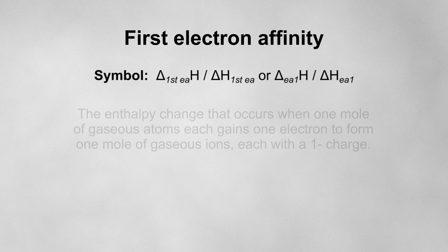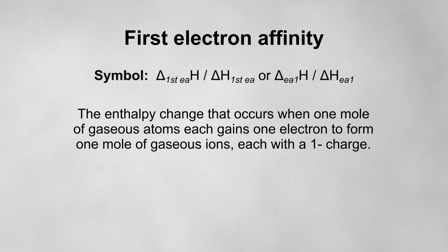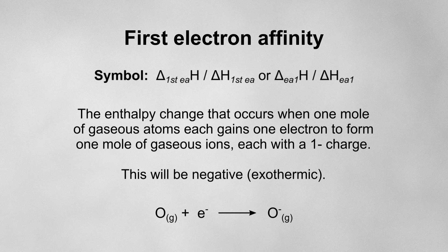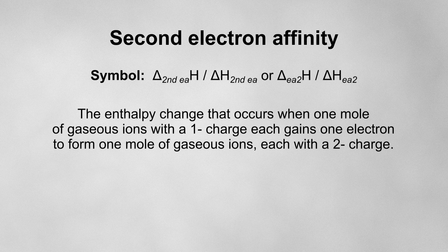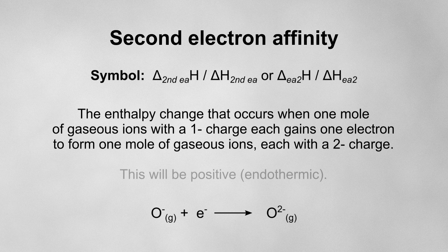The first electron affinity is the enthalpy change that occurs when one mole of gaseous atoms each gains an electron to form one mole of gaseous ions each with a 1− charge. For example, this equation shows the first electron affinity for oxygen. It is usually negative because we're forming an attractive force between the negative electron and the positive nucleus. The second electron affinity is the enthalpy change when one mole of gaseous 1− ions each gains an electron to form one mole of gaseous 2− ions. It is always positive because it requires energy to push a negative electron onto a negative ion, so the process is endothermic.